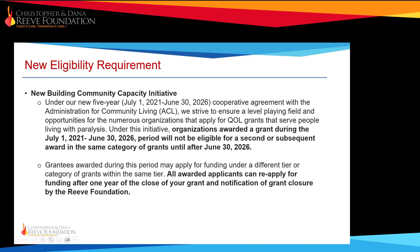For example, if your organization received a Tier 1 adaptive sports grant this cycle, you must wait one year after the grant is completed, but cannot apply for another Tier 1 adaptive sports grant until after June 2026. You can, however, apply for other categories in the same tier or other tiers. If you have questions about eligibility as a past grantee, email us at qol@reeve.org.